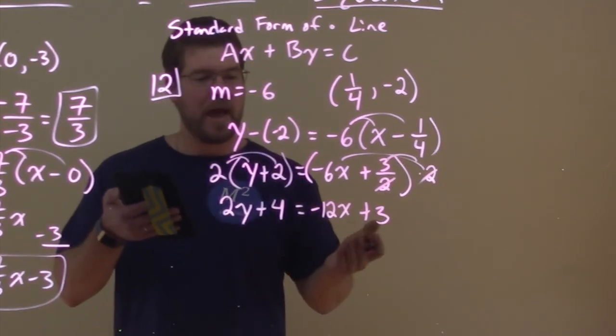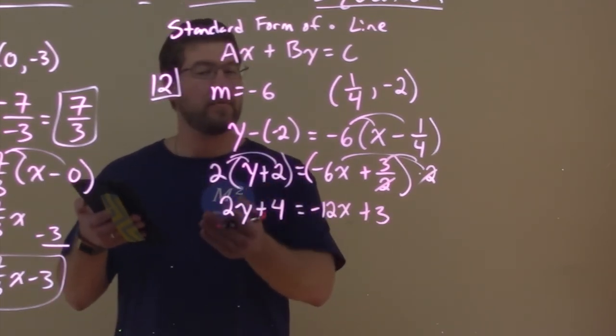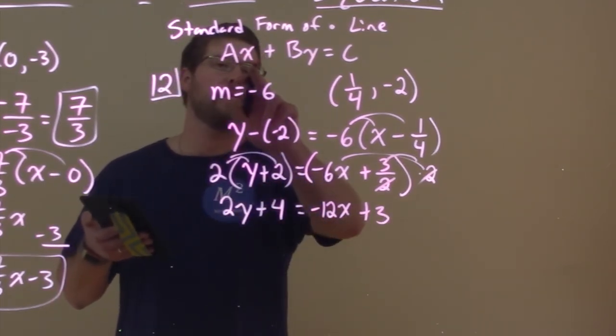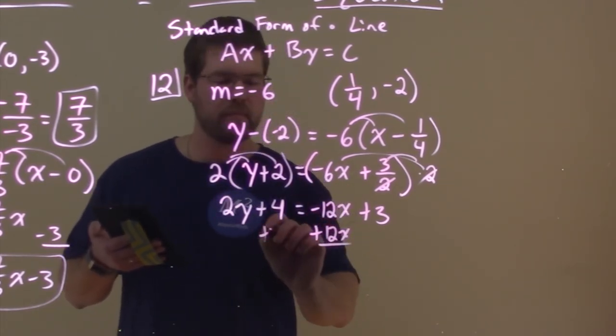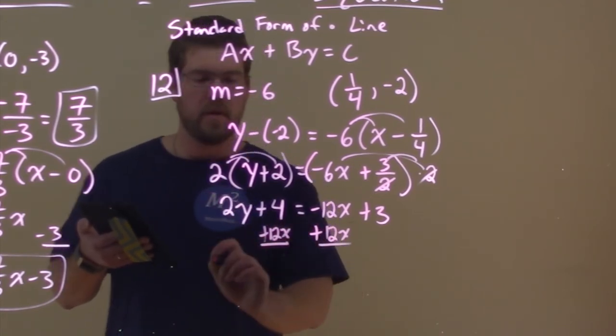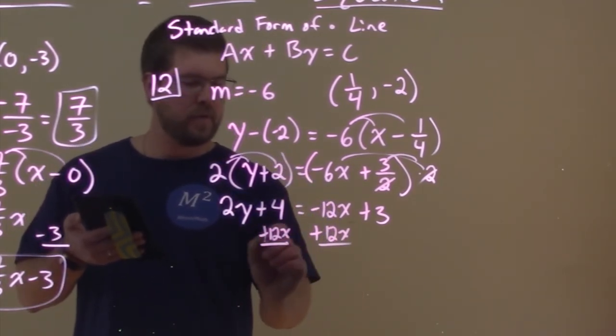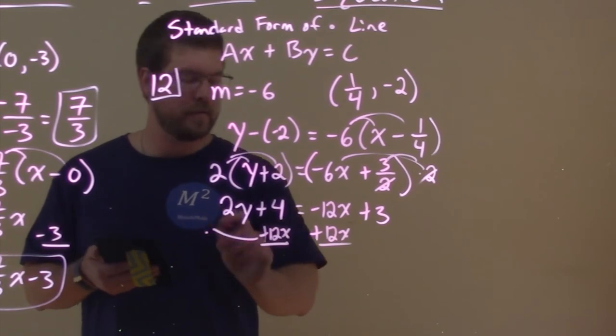So now we want to bring our X's, our variables, to the left and our numbers to the right to look like this in our standard form. So I'm going to add a 12X to both sides. And so I have a 12X, oh, I guess, put it over there. Let me rewrite that. One second. Got ahead of myself here.